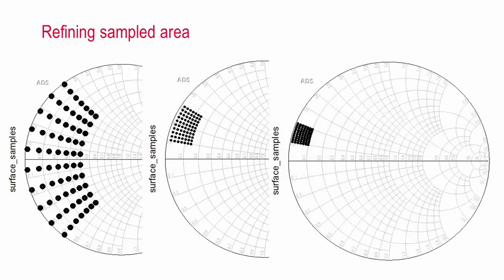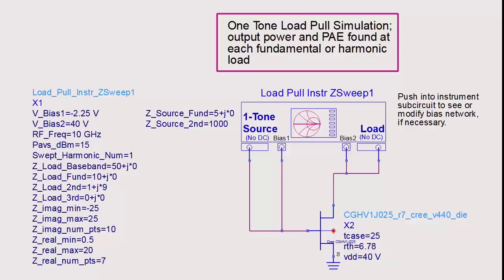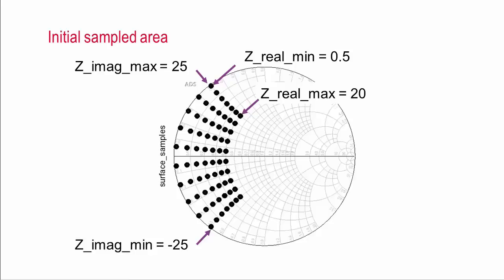How do we simulate load pull? This simulation setup is from the load pull design guide. I have replaced the sample device with a Cree GAN device, set the bias voltages for class A operation, the source frequency, and the available source power. By default, the impedance at the fundamental is swept with the harmonic loads fixed, but we can easily switch this to a load pull of the second or third harmonic. We also need to specify the source impedance at the fundamental and the second and third harmonics, and we specify the ranges of the real and imaginary parts of the impedance. Initially, you may want to sample a fairly large region of the Smith chart to see roughly where the optimal load is. This shows the region of the Smith chart that we sample initially.